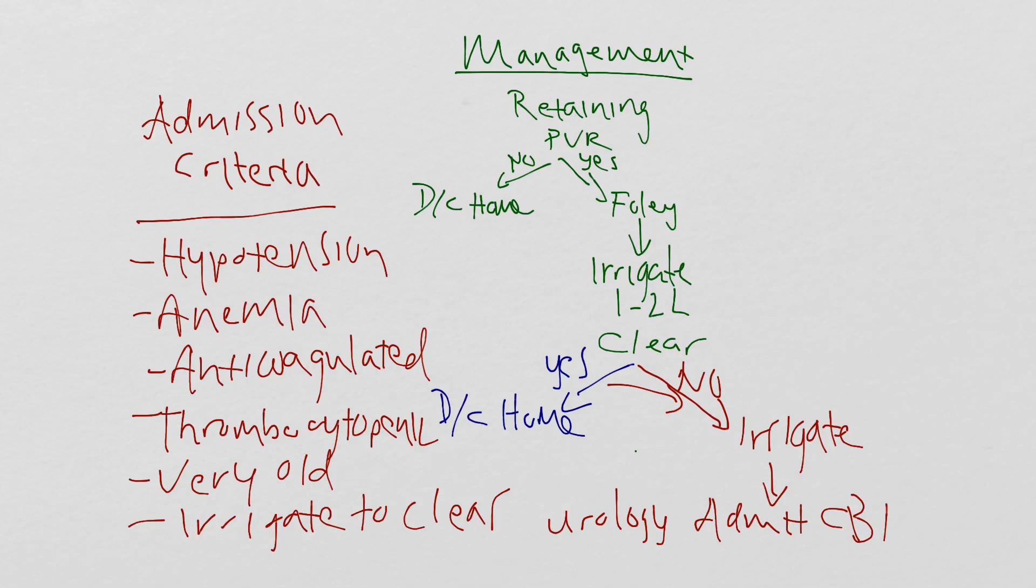One last thing we'll mention is a documentation pearl. When you're documenting on these patients, you always want to be sure to mention in your MDM that you cannot rule out malignancy. Be sure to try your best to get this patient a urology follow-up so that they can get a cystoscopy as an outpatient, if the patient is going to be discharged home.